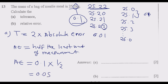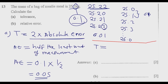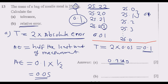Returning to our problem: the absolute error is 0.05. Now we multiply by 2 to find the tolerance. So tolerance = 2 × 0.05 = 0.10, which equals the least unit of measurement. Therefore the tolerance is 0.1 kg.